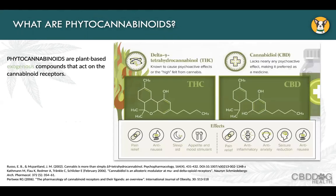Phytocannabinoids — 'phyto' meaning plant — are the plant-based compounds that act on cannabinoid receptors. There are over 200 of them altogether, but the two main ones we think about are delta-9-tetrahydrocannabinol, which is THC, and cannabidiol, which is CBD. They have a myriad of effects: for THC primarily pain relief, nausea relief, sleep, and appetite and mood stimulation; for CBD more pain relief, anti-inflammatory, anti-anxiety, seizure reduction, and anti-nausea.